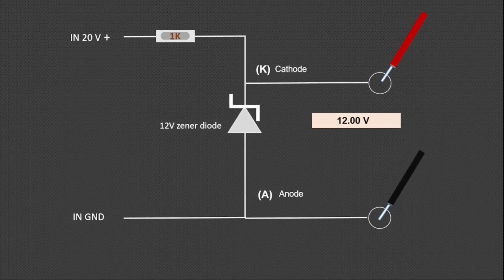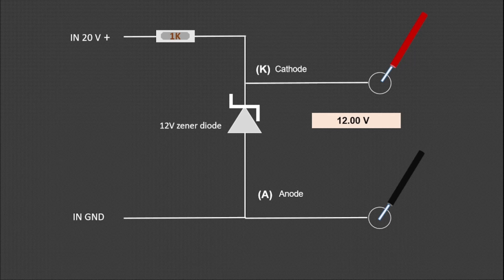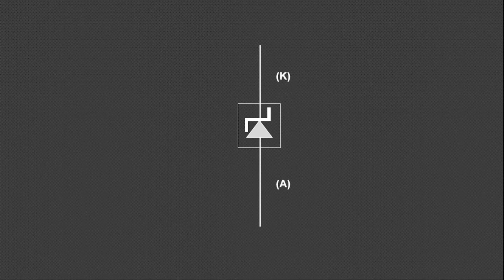If you apply 20 volts to the Zener diode, it will only let 12 volts pass through because it is set to 12 volts. The TL431 works just like a Zener diode.